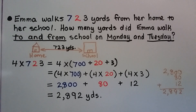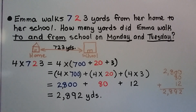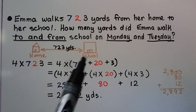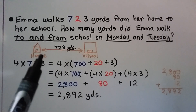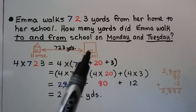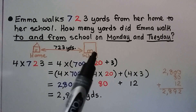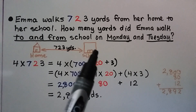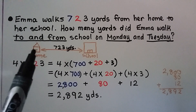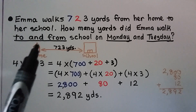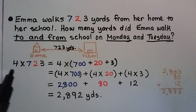Emma walks 723 yards from her home to school. How many yards did Emma walk to and from school on Monday and Tuesday? She walks 723 yards to school, then 723 yards back home each day — and she does that same thing on Tuesday. That means we have 4 times 723.